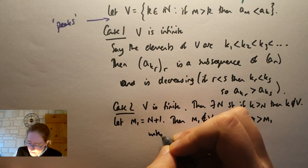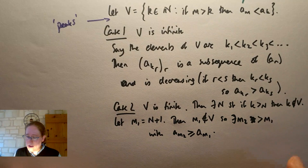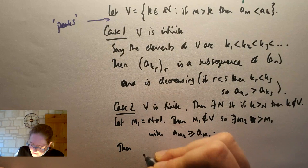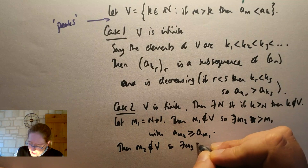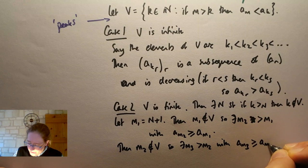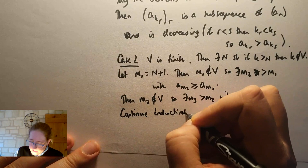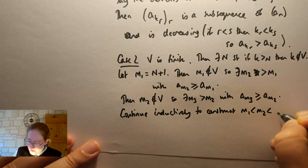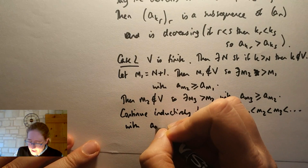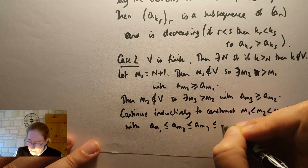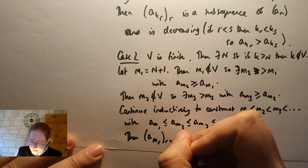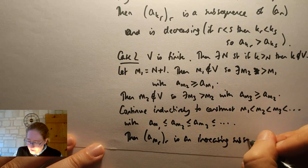So that means that there's some point later than it, some term later than a_(m_1) in the sequence that's bigger. So there exists an m_2 greater than, well, in fact, greater than m_1, sorry, with a_(m_2) greater than or equal to a_(m_1). Otherwise, m_1 would have been in V. And then m_2 is not in V. So there exists an m_3 greater than m_2 with a_(m_3) greater than or equal to a_(m_2), and so on. So we can continue inductively to construct m_1 less than m_2 less than m_3, and so on, with a_(m_1) less than or equal to a_(m_2) less than or equal to a_(m_3), and so on. And then a_(m_r) is an increasing subsequence of a_m.